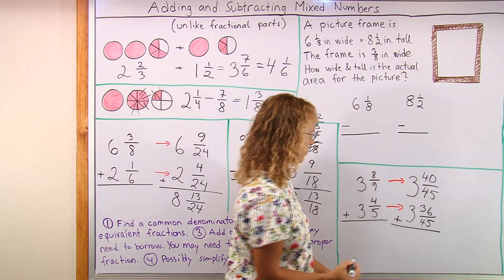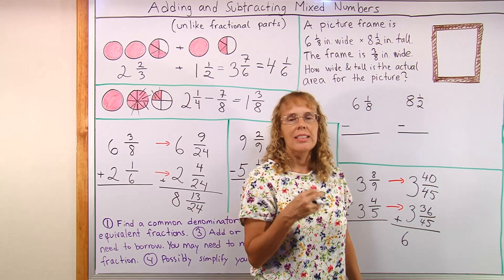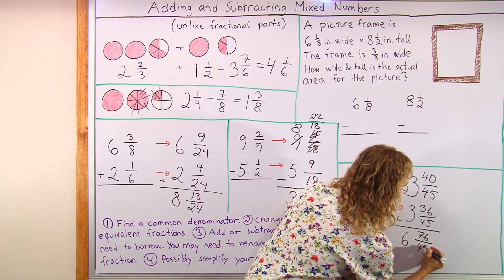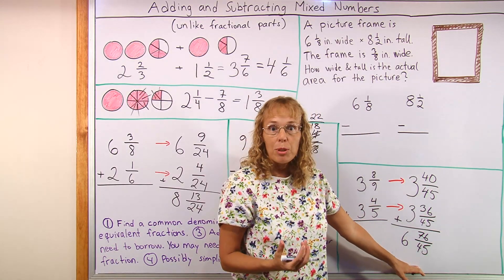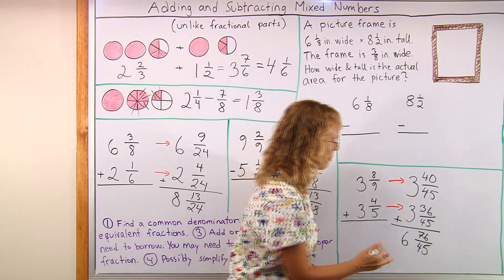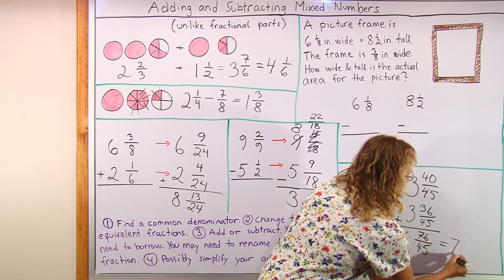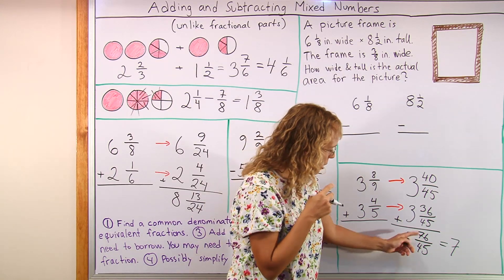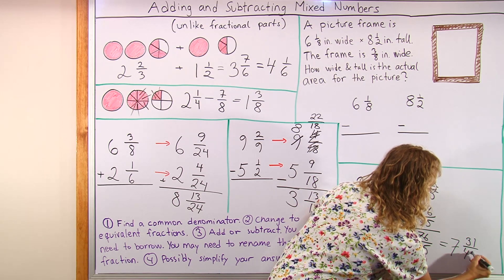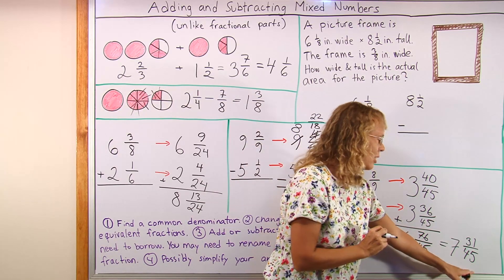Now add. 3 and 3 makes 6. And then we have 40 and 36 which makes 76 over 45. And here we have a fraction that is an improper fraction. It is more than 1. So we need to change our final answer yet. From this we will get one more whole pie. So the count of pies increases to 7. Then we are left with 31 over 45. Again my answer doesn't simplify further. But you could have one more step here if this was to be simplified.